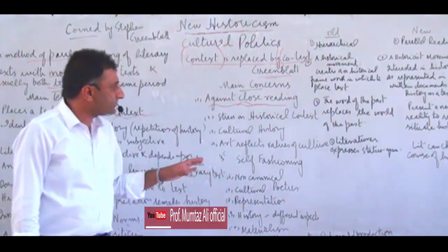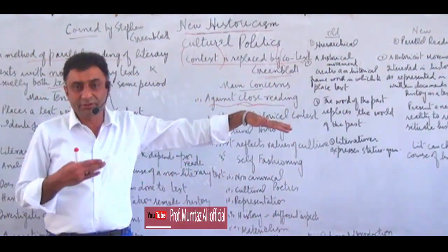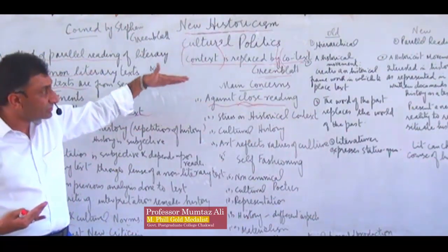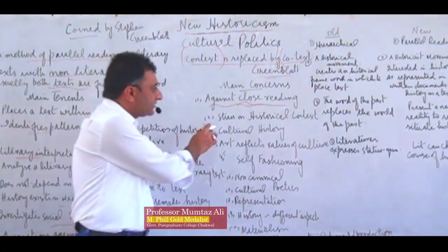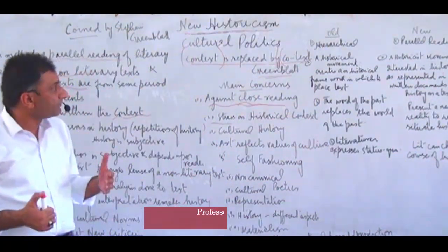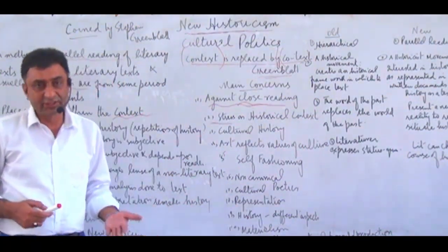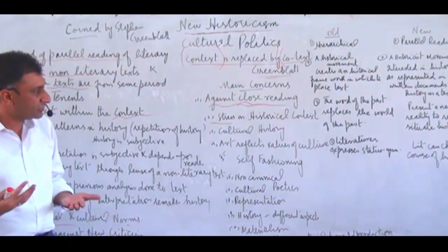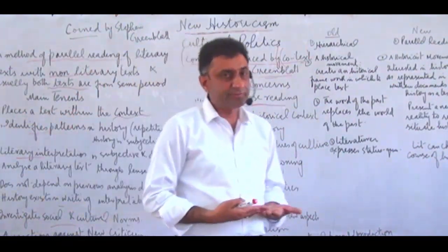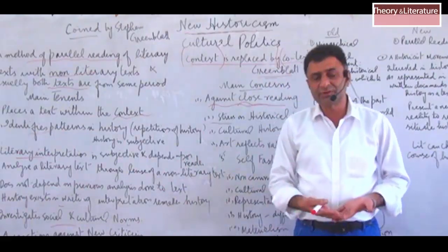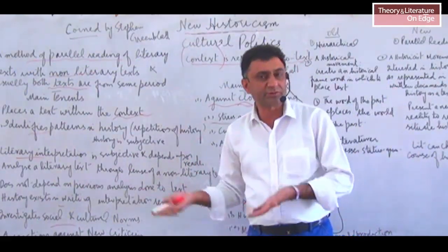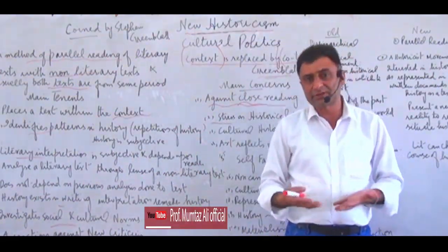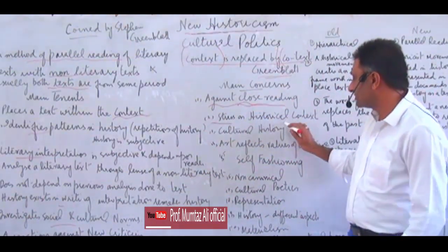New Historicism says that we will have to keep in mind canonical as well as non-canonical books, literary as well as non-literary books. This is its concern against close reading. New Historicism stresses upon historical context — whatever has happened in history. This includes the politics, religions, tensions, economic systems, moralities, values, culture, norms, societies, and civilizations of the past. These are all part of the context and are given importance.